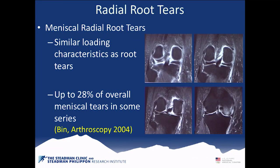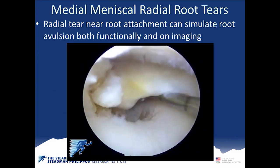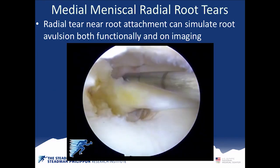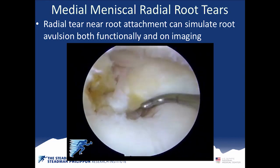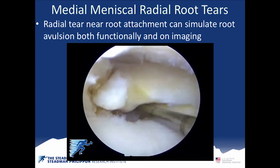What we mainly are talking about is radial root tears — not a root tear avulsing at its actual attachment site, but detaching just a little bit away from the attachment site. These are basically the same as having a complete detachment, and this is what we treat clinically. In some of the literature they represent up to 28% of overall meniscus tears. Arthroscopically, we'll see a radial root tear close to the root attachment, and it simulates a root tear both functionally and on overall imaging.